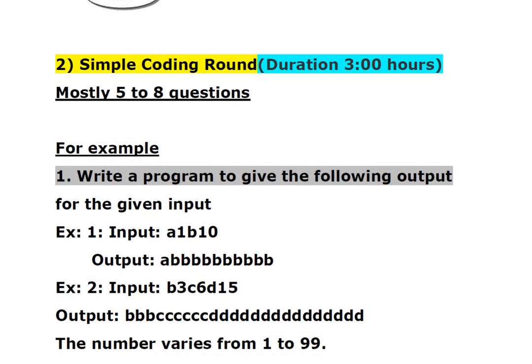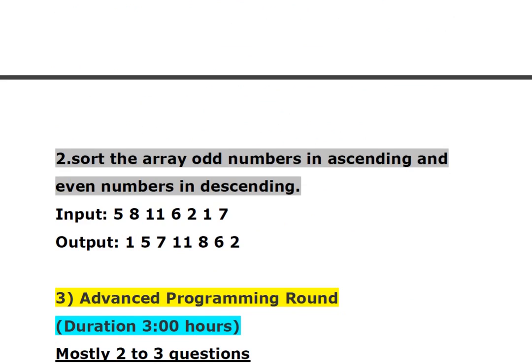After being shortlisted, you will be called for the second round which is the simple coding round. The duration is 3 hours and mostly 5 to 8 questions will be asked. For example, one question is: write a program to give the following output for the given input — input A1 B10 means print A one time and B ten times. Another example is to sort odd numbers in ascending order and even numbers in descending order.